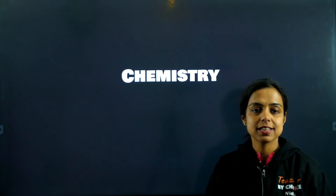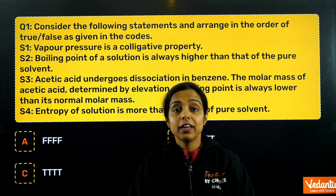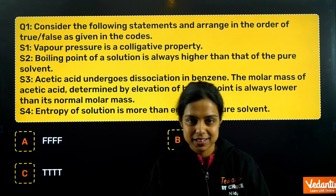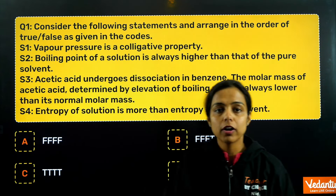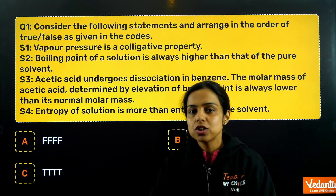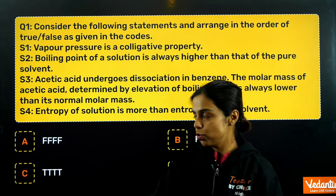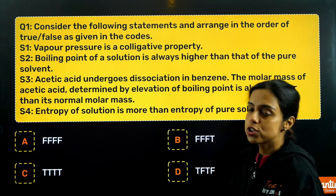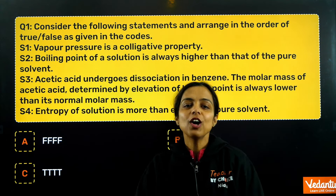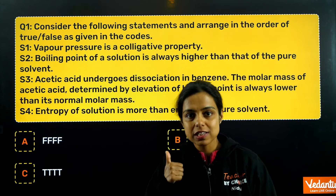The first question of the test is not difficult, but you should be very cautious and careful to avoid any kind of silly mistake. The first question requires you to check each statement and tell whether they are true or false. The very first statement is: vapour pressure is a colligative property — this is false. Relative lowering of vapour pressure is a colligative property, not vapour pressure itself.